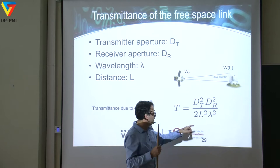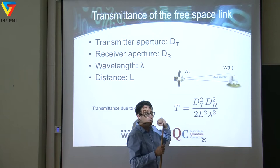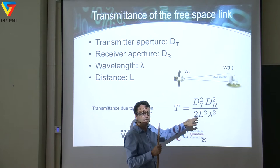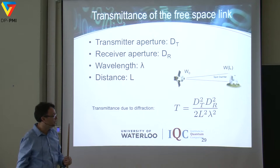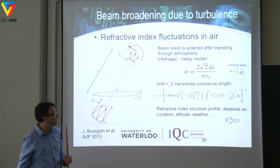This is what makes satellite communication viable: the transmission loss only scales quadratically — one over distance squared — not exponentially. That is a very favorable transmission behavior.